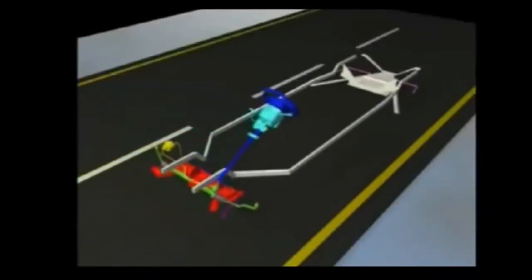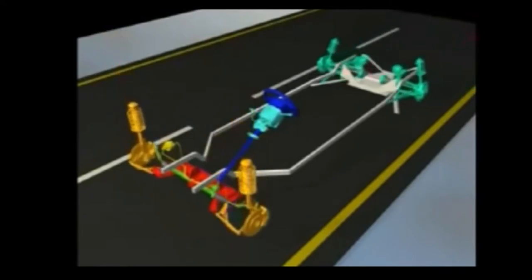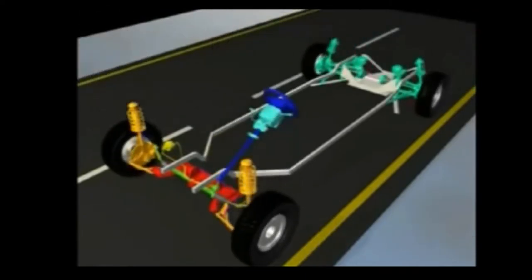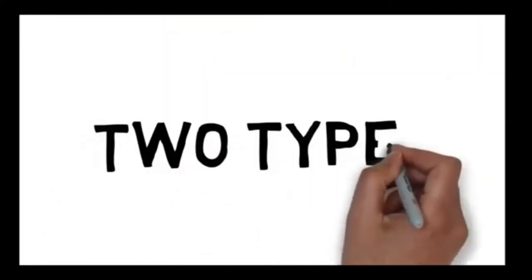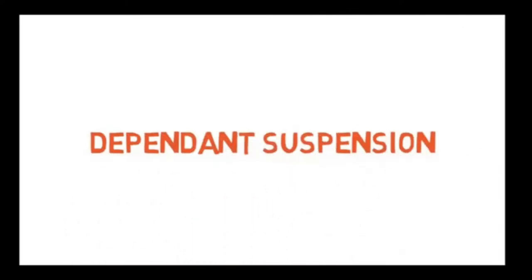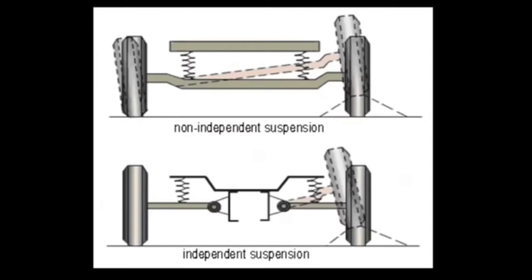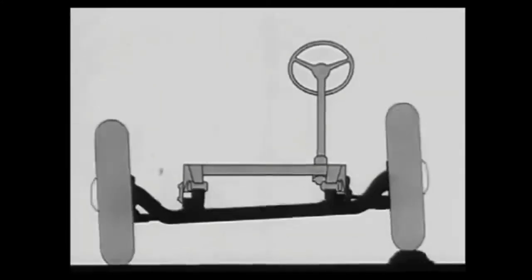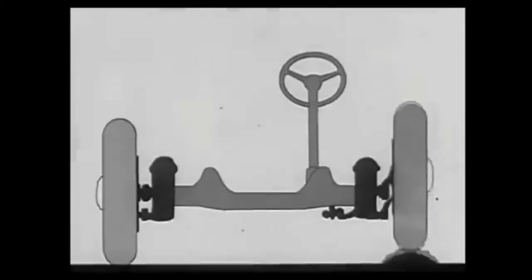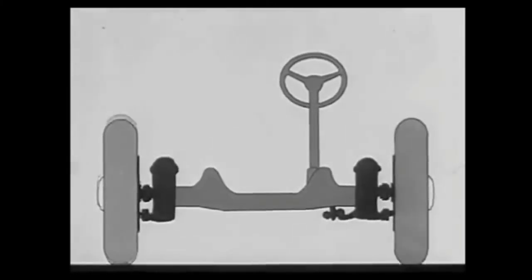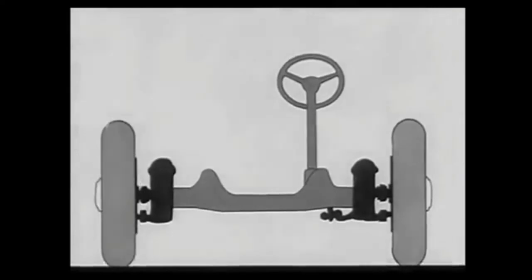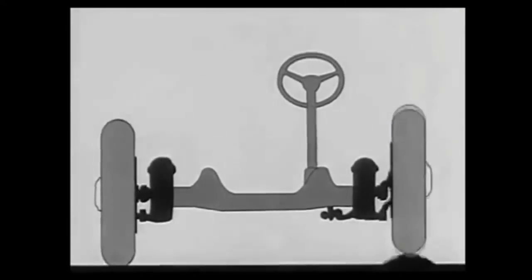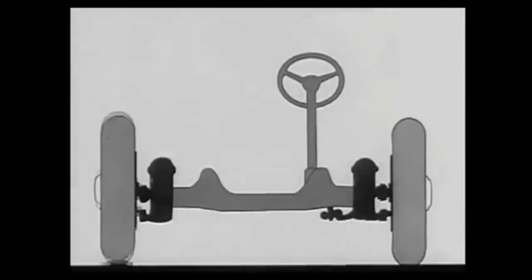Suspension is the system of chassis, steering, shock absorbers, and tires. A car suspension may be dependent or independent. In a dependent suspension, there is a rigid linkage between the two tires — the force acting on one wheel will affect the other. An independent suspension system allows both wheels to move vertically up and down independently.